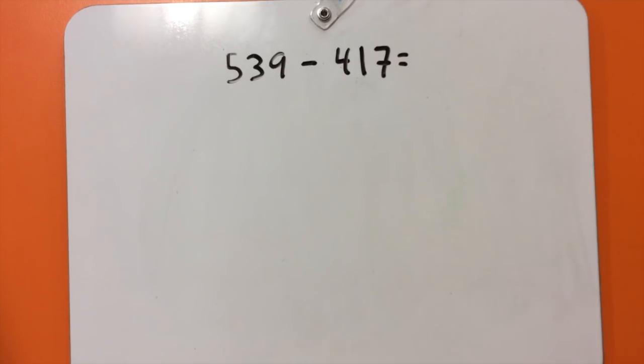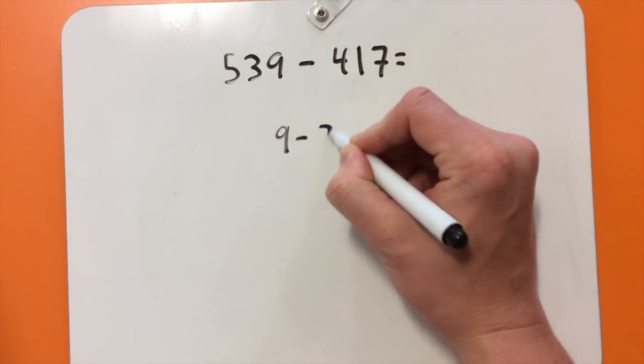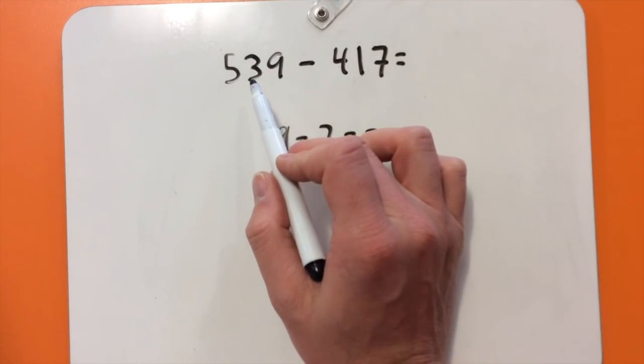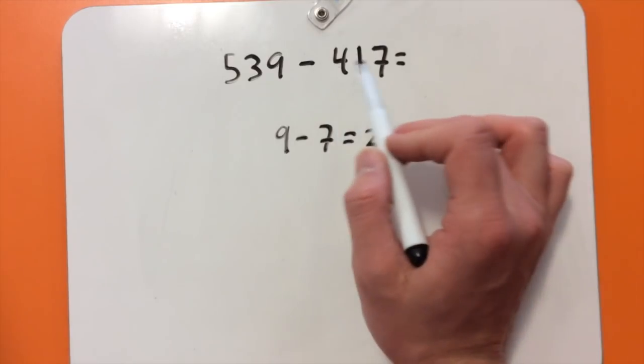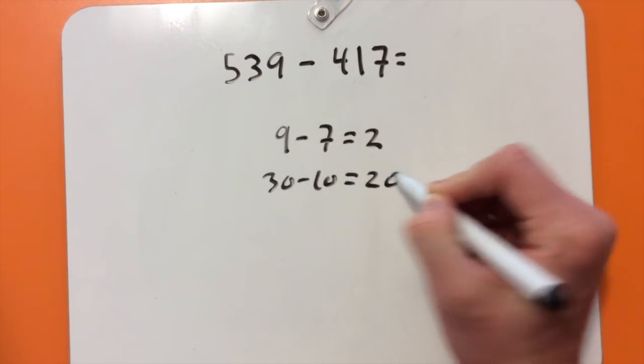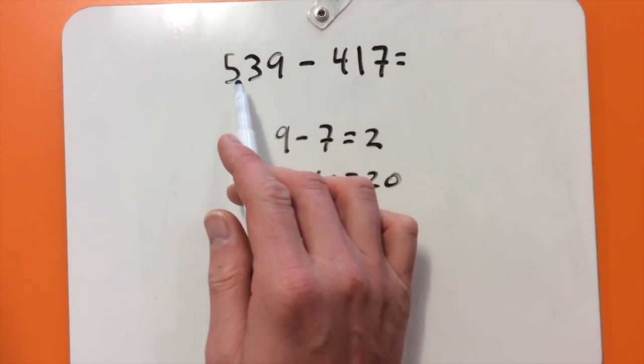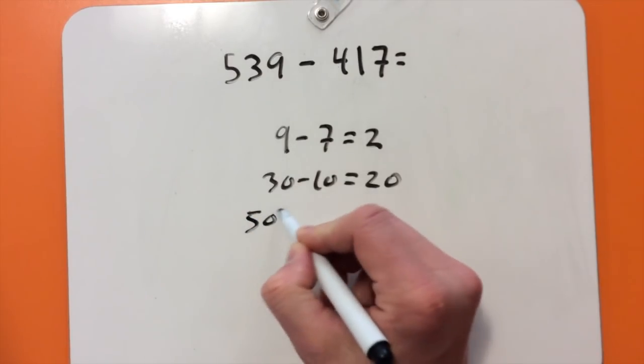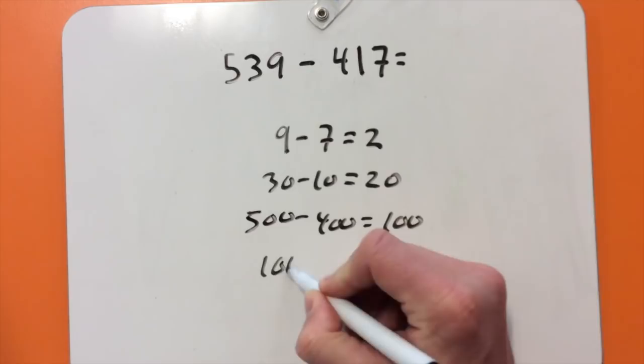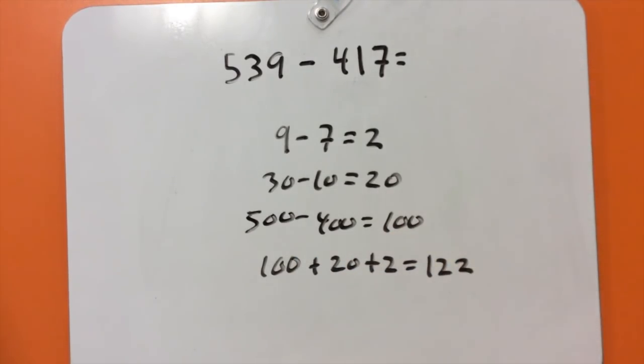We're going to start with our ones. So we've got 9 ones take away 7 ones. So 9 take away 7 is 2. Then we're going to continue with our tens. So 3 tens, which is 30, take away 1 ten, which is 10, equals 20. And we're going to finish with our hundreds. So 5 hundreds take away 4 hundreds equals 100. 100 plus 20 plus 2 equals 122.